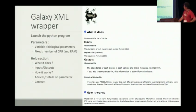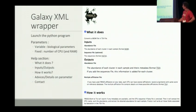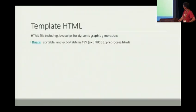The Galaxy XML wrapper launches a Python program. In the parameters, you have variable ones related to biological parameters and fixed ones related to the number of CPUs and RAM, for example. And there is a section with the FROGS logo.